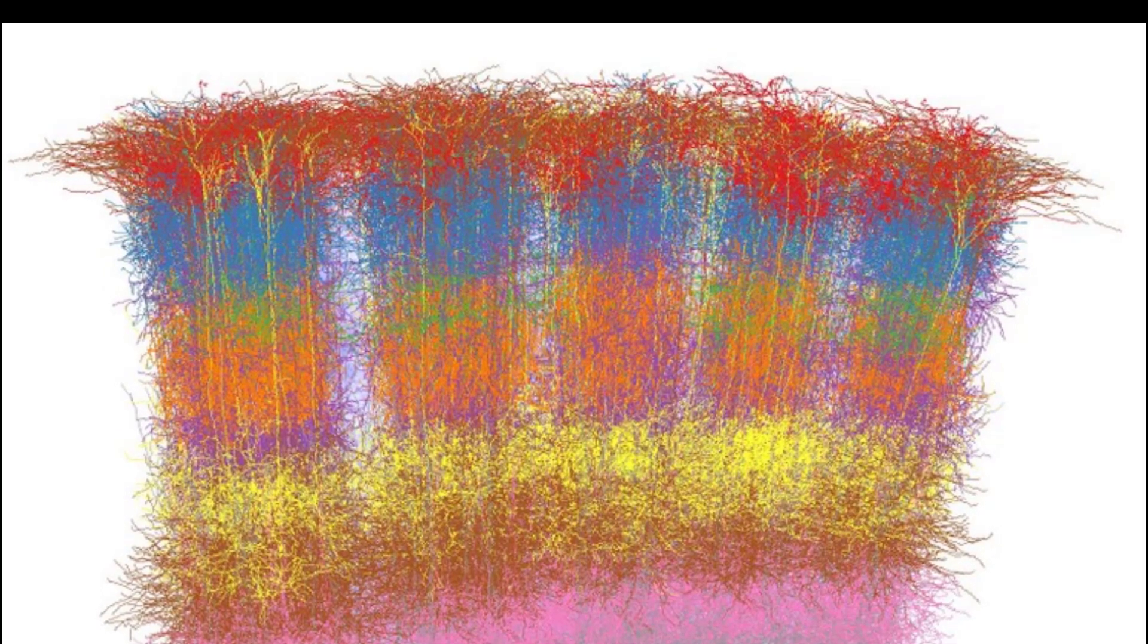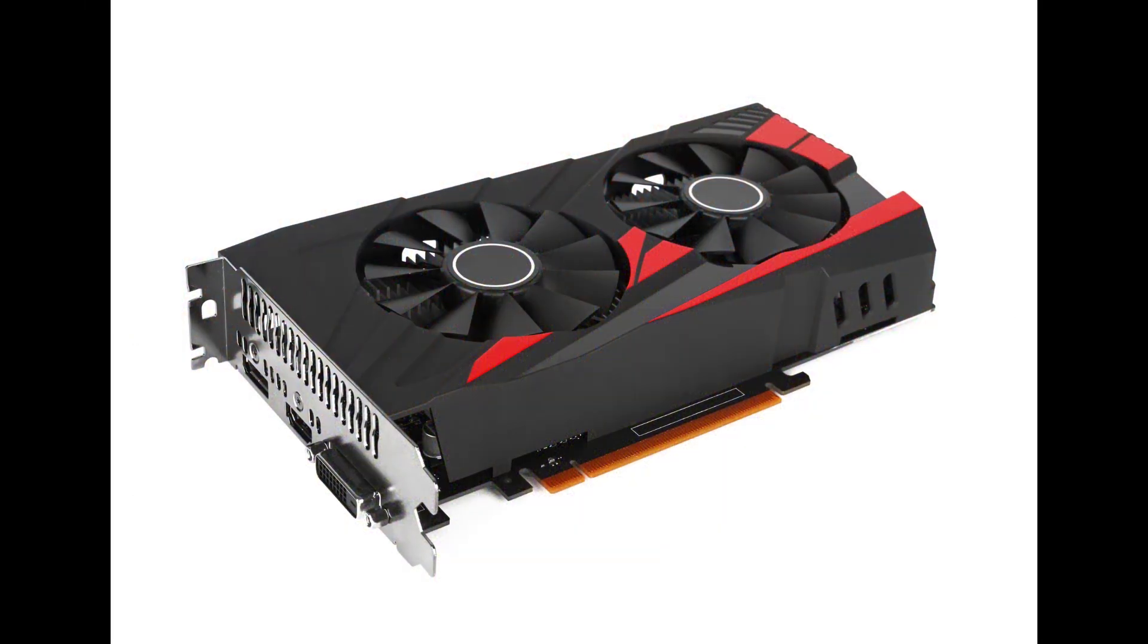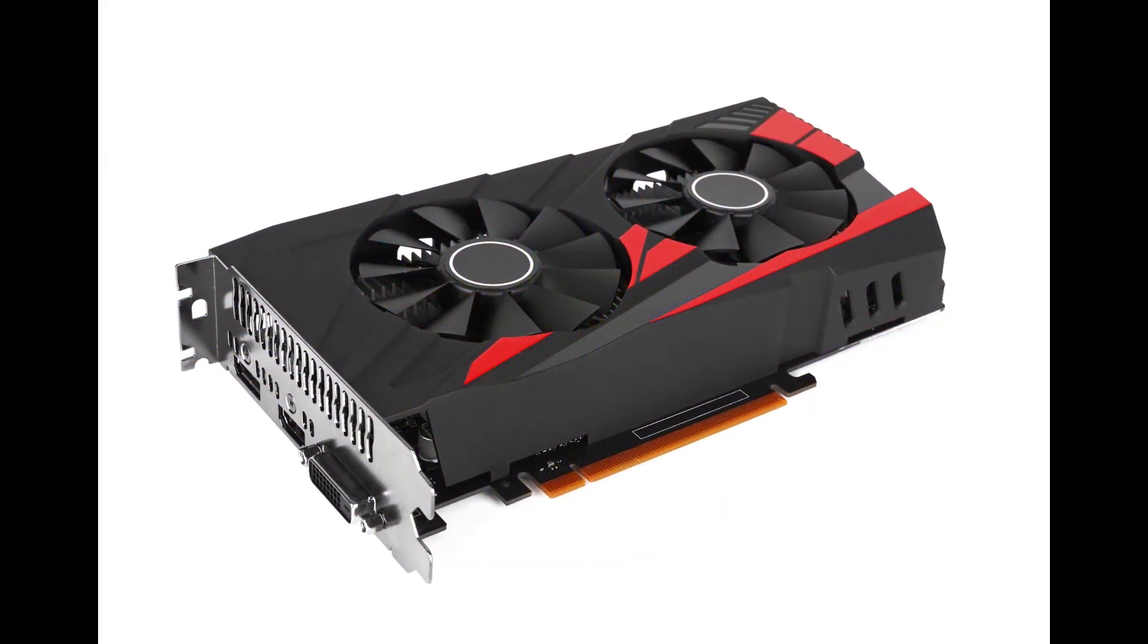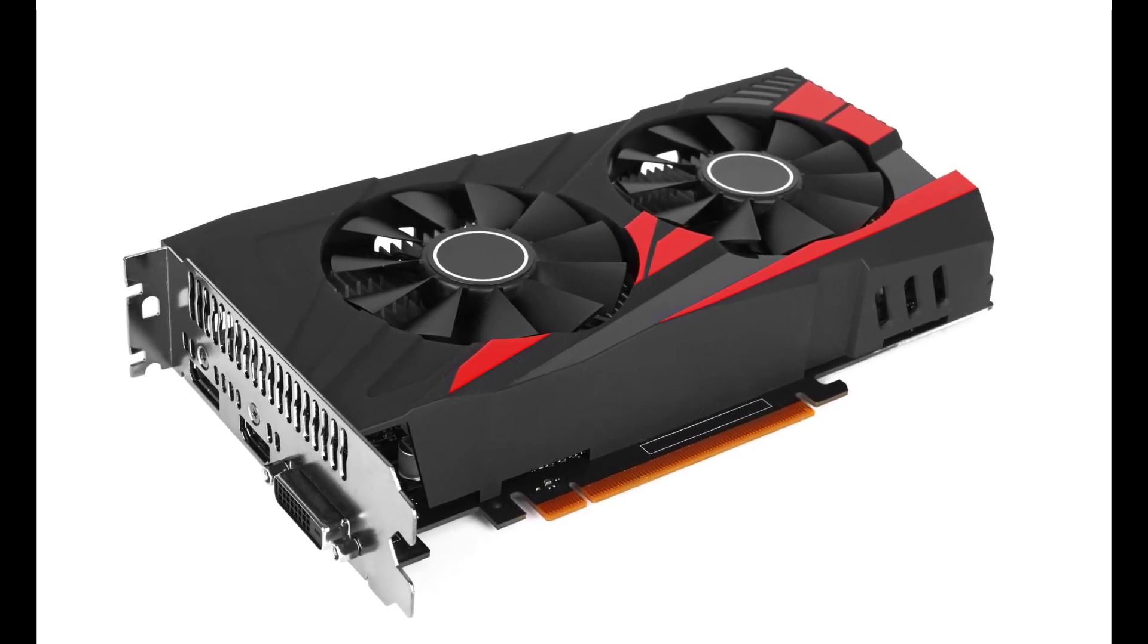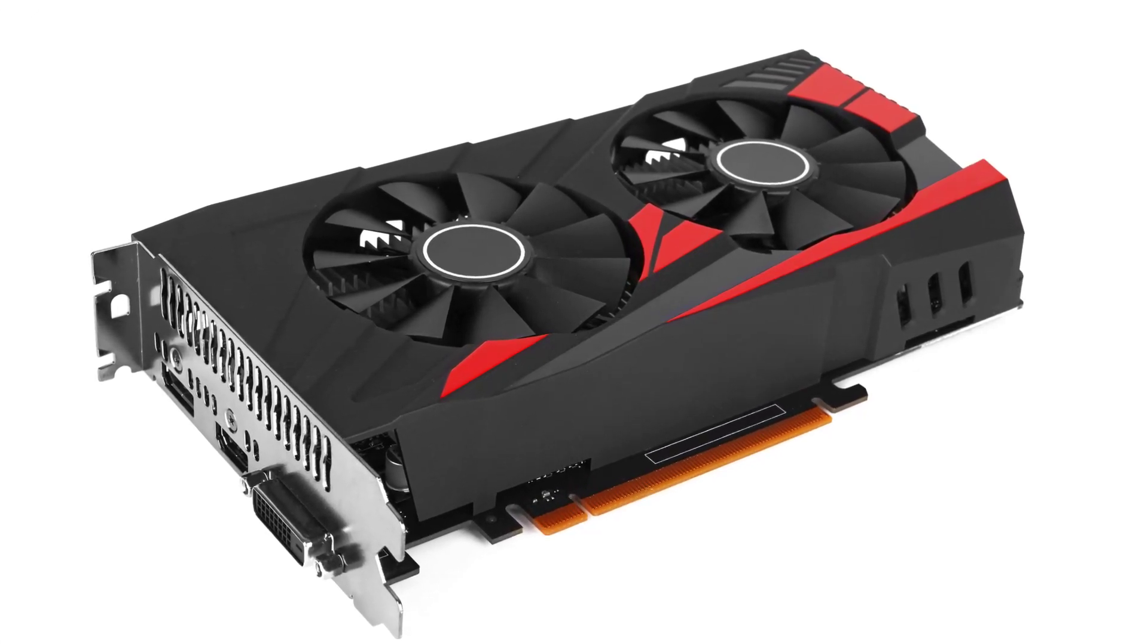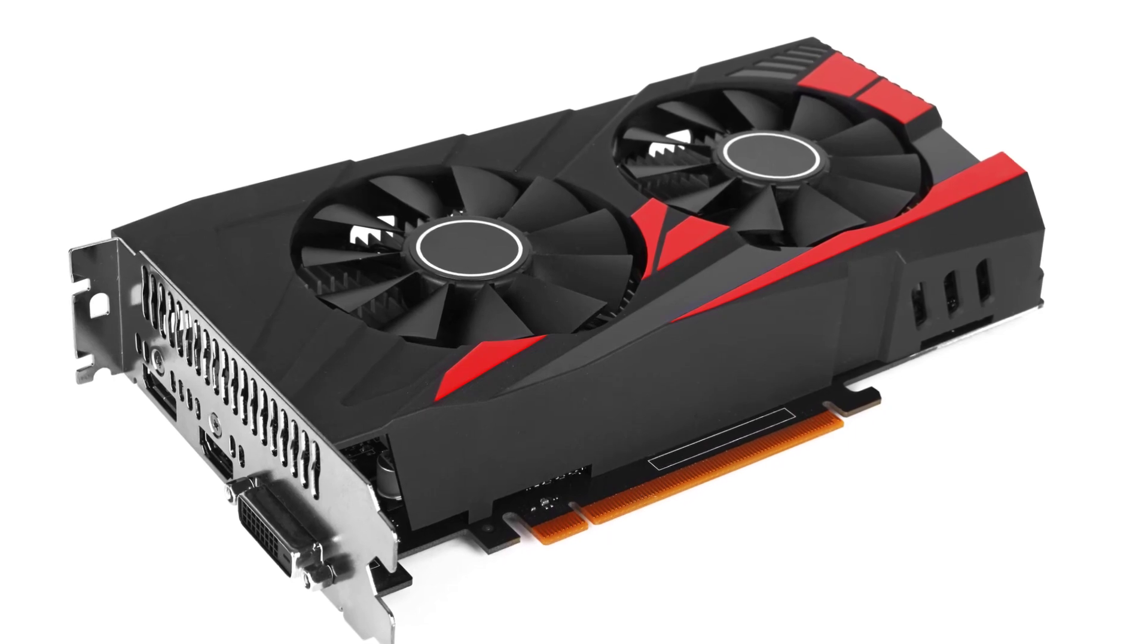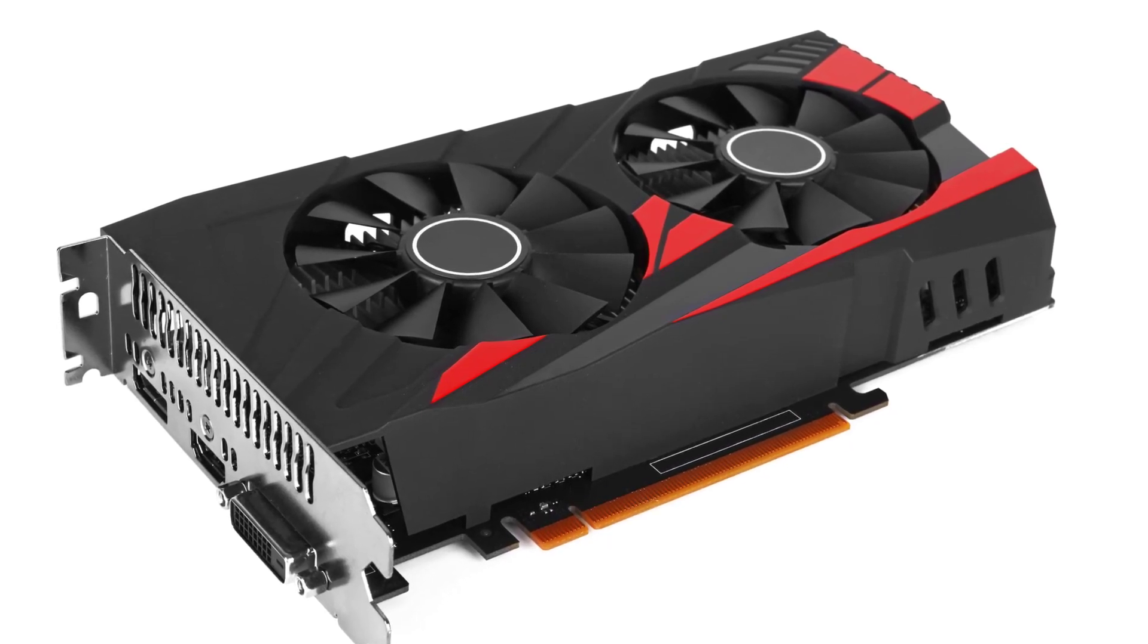In a happy coincidence, this is exactly how the video card inside your gaming PC works, and the same computing hardware that lets you play Call of Duty can be used to simulate how brains work at a rough level. This is what really enabled deep learning and artificial intelligence to take off.